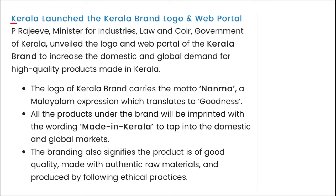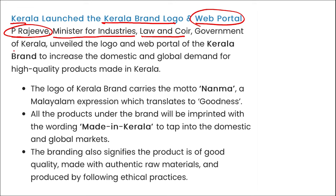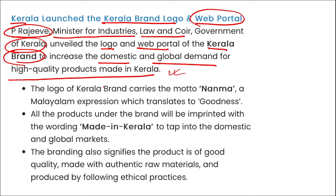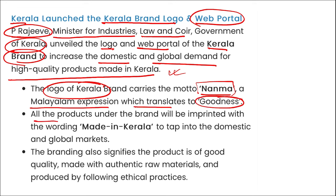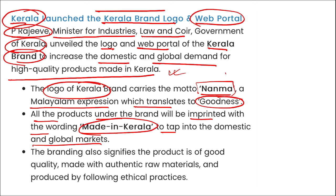Kerala launched the Kerala Brand logo and web portal. Minister P. Rajeev of the Industries, Law and Coir Government of Kerala unveiled the logo and web portal for the Kerala Brand to increase domestic and global demand for high-quality products made in Kerala. The logo carries the name 'Nanma' — a Malayalam expression meaning 'goodness.' All products under the brand will be imprinted with 'Made in Kerala.'